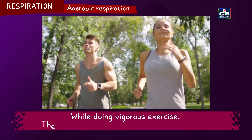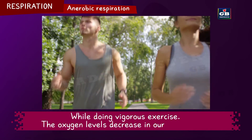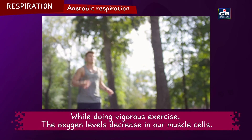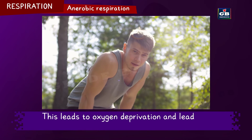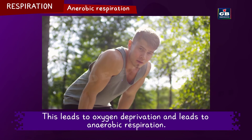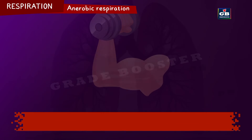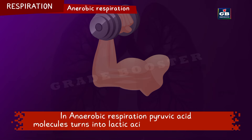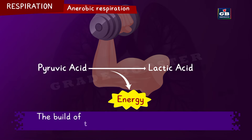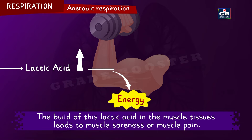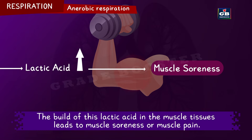While doing vigorous exercise, the oxygen levels decrease in our muscle cells. This leads to oxygen deprivation and leads to anaerobic respiration. In anaerobic respiration, pyruvic acid molecules turn into lactic acid by releasing energy. The buildup of this lactic acid in the muscle tissue due to anaerobic respiration leads to muscle soreness or muscle pain.